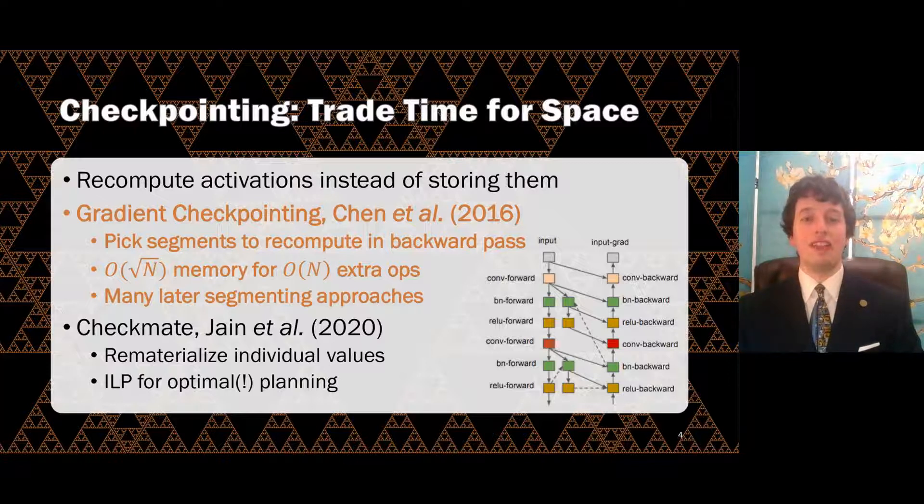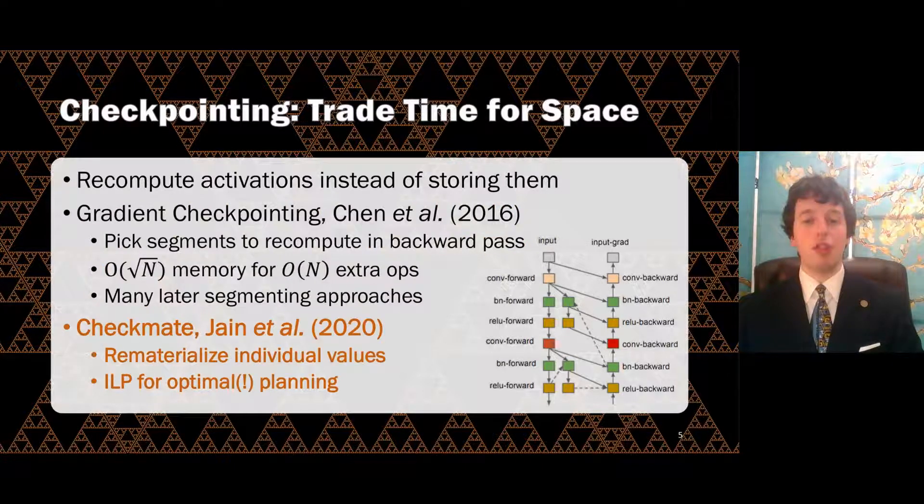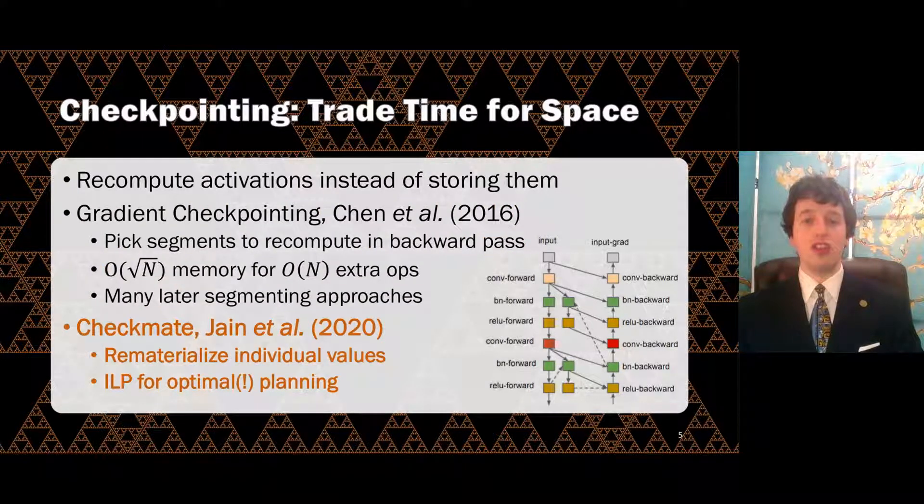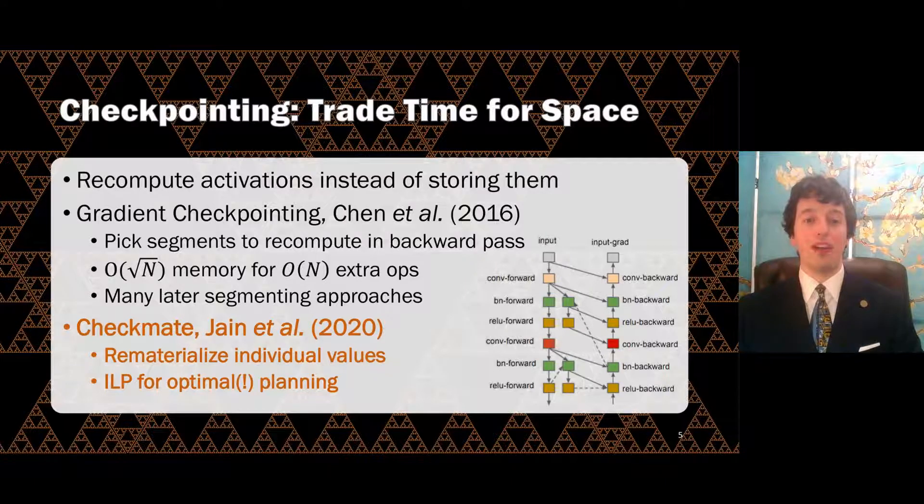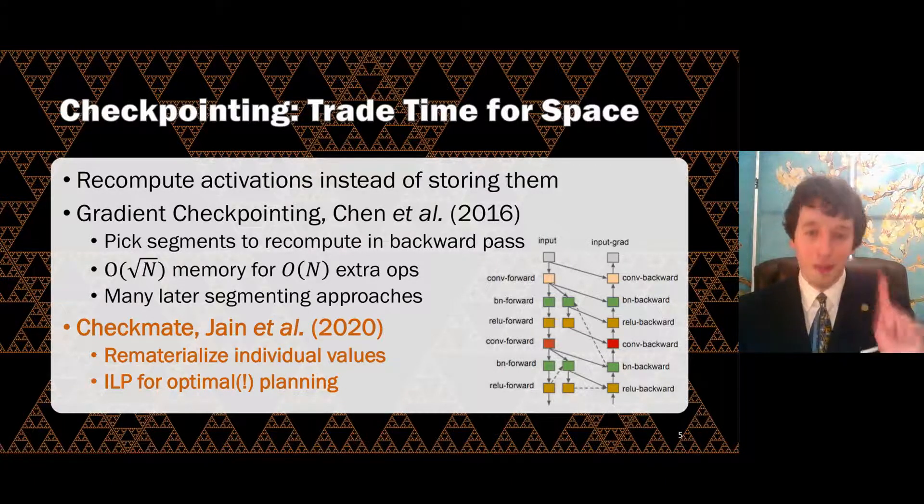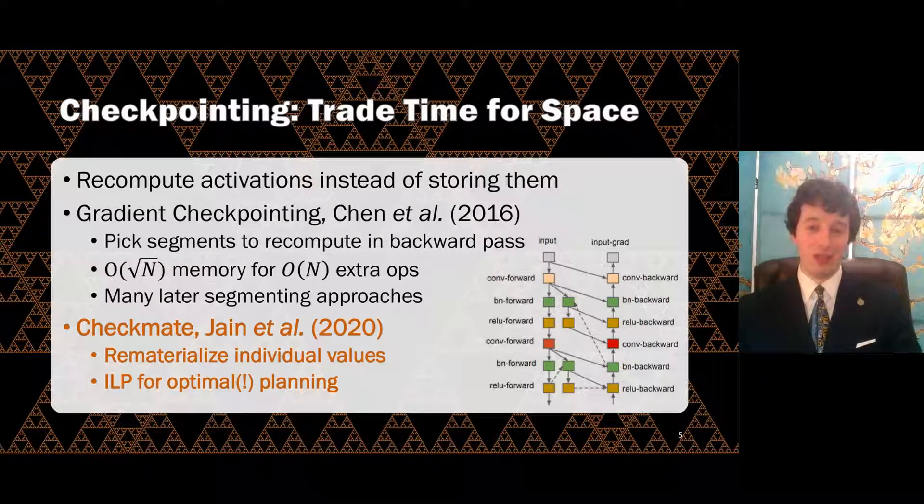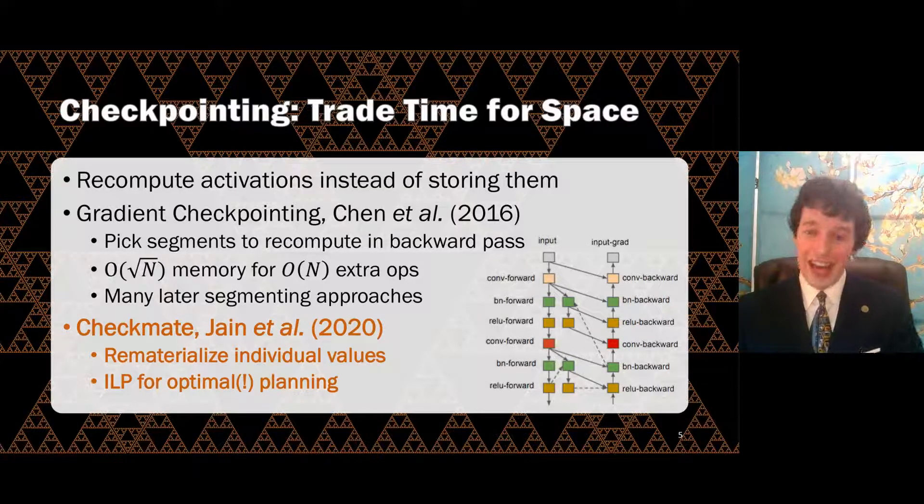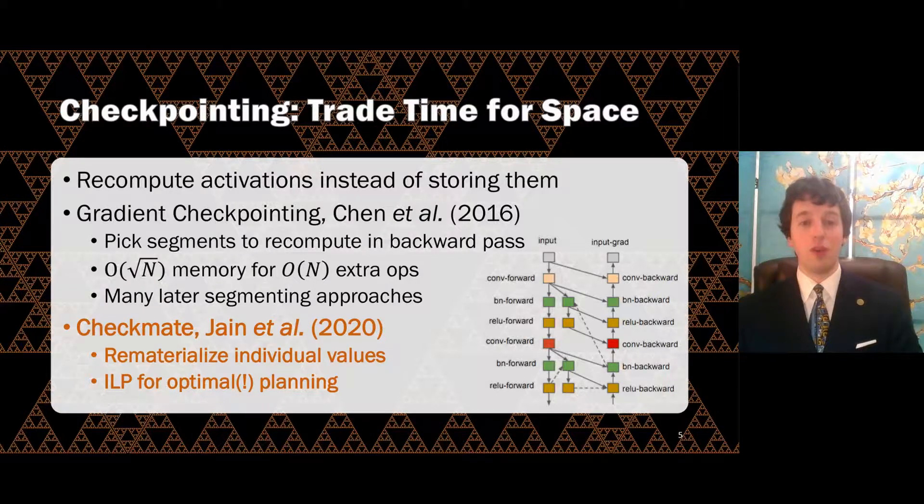Subsequent techniques have applied similar segmenting approaches to more general graphs. Checkmate, which I mentioned earlier, uses a reduction to integer linear programming to plan evictions and recomputations to find provably optimal rematerialization schedules. Optimal! Now that has a very nice ring to it. Does that mean that checkpointing is a solved problem?